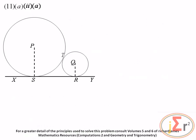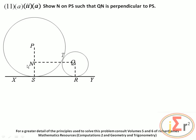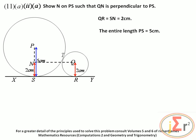We need to calculate the length PN. Show N on PS such that QN is perpendicular to PS. We know QR equals SN equals 2 centimeters, and the entire length PS equals 5 centimeters. Since SN equals 2 centimeters and PS equals 5 centimeters, PN equals 5 minus 2 equals 3 centimeters.